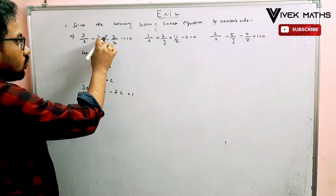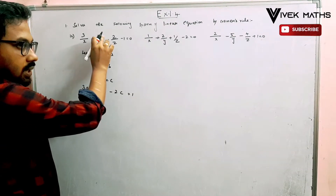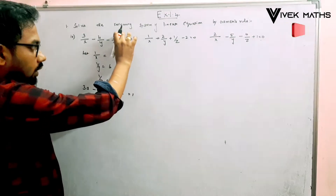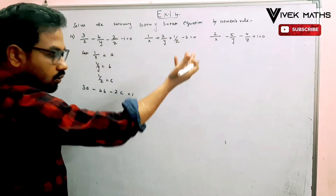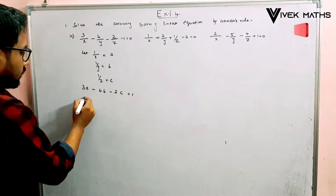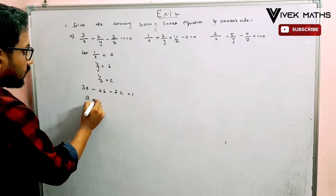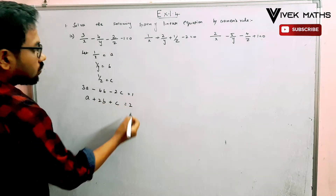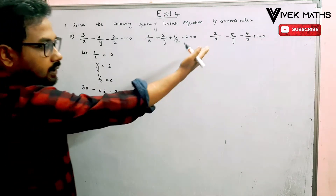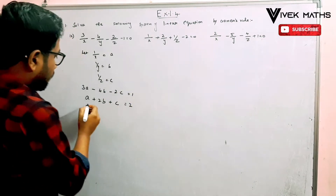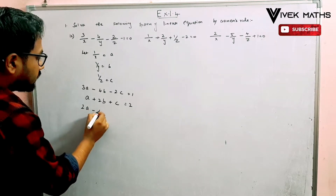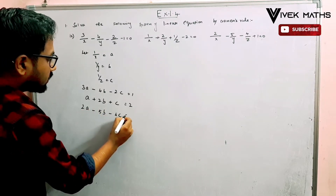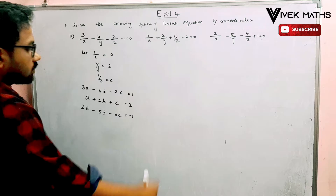Where 1/x is a, 1/y is b, and 1/z is c. The second transformed equation is: a plus 2b plus c equal to 2. And the third equation is: 2a minus 5b minus 4c equal to minus 1.